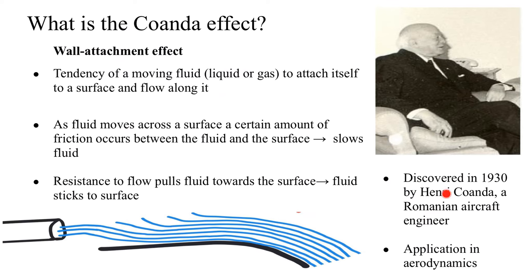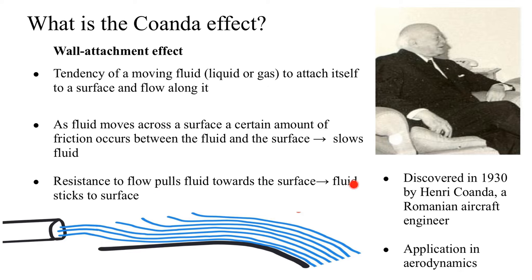It was discovered in 1930 by Henry Coanda, who was an aircraft engineer, and it has a lot of applications in aerodynamics. In other words, it is known as the wall attachment effect. What it means is that it indicates the tendency of a moving fluid, either a liquid or a gas, to attach itself to a surface and flow along with it. As the fluid moves across a surface, a certain amount of friction occurs between the fluid and the surface.